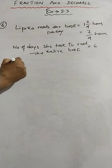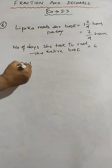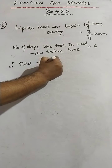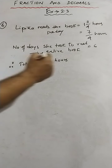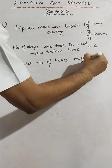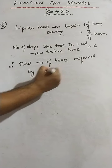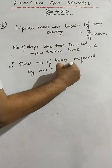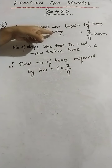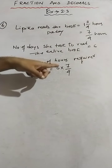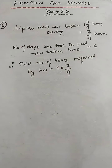Therefore, the total number of hours required by her would be six into seven-fourths. Per day she is reading seven-fourths hours, so for six days she will read more — that means six multiplied by seven-fourths.